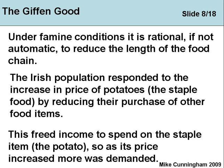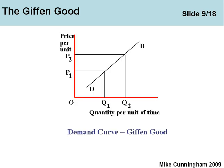This freed up income, and so as the price of potatoes increased, more was demanded. That's the Giffen good demand curve. There are some technical aspects related to income and price effects, but the upshot is it's an upward-sloping demand curve — as the price rose, people tried to buy more of it.